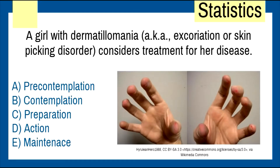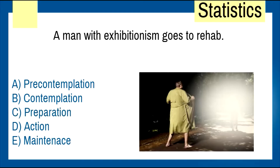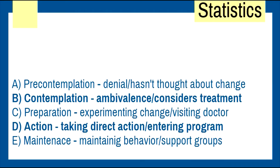A girl with dermatillomania — excoriation or skin-picking disorder — considers treatment for her disease. Which stage of change is that? She's considering treatment: that's contemplation. Pre-contemplation is when they're not even considering treatment. A man with his condition goes to his psychiatrist for help — that's preparation; he hasn't taken steps to change yet. A man goes to rehab — that's action. The five stages: pre-contemplation, contemplation, preparation, action, and maintenance.